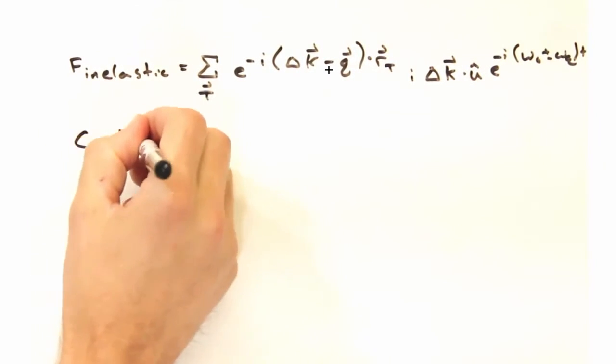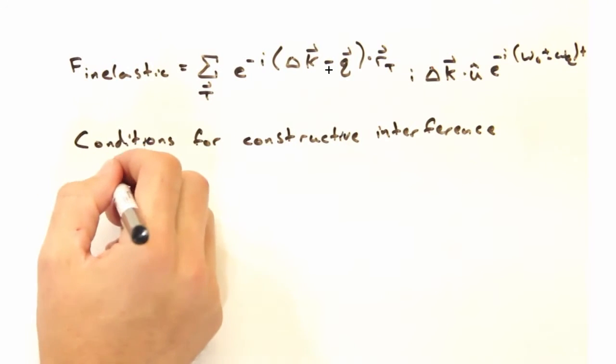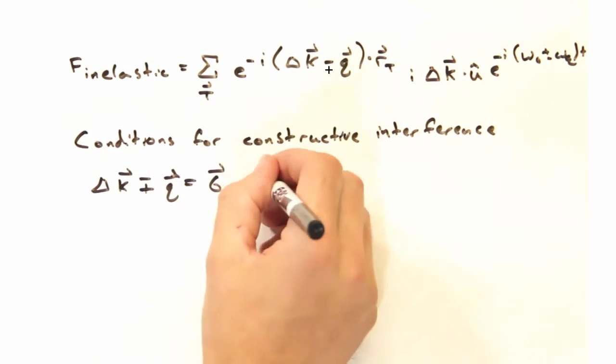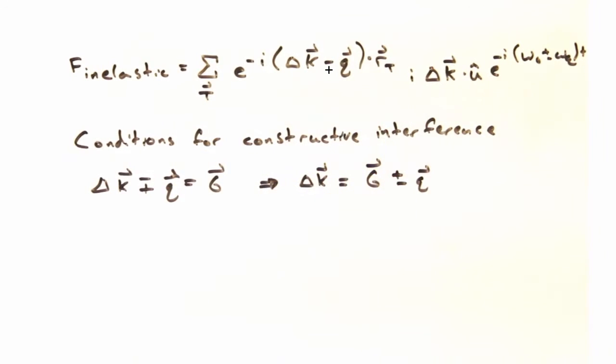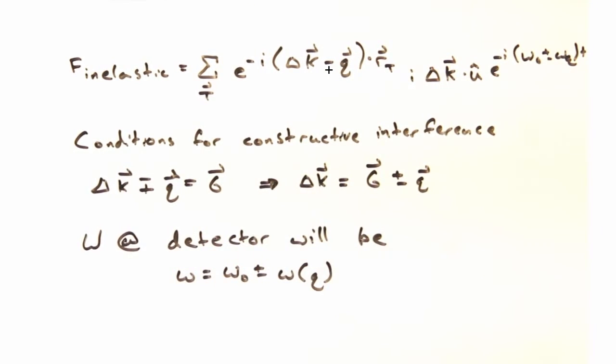We can obtain an expression for constructive interference by looking at the first exponential, where we see that delta k plus or minus q is going to be equal to g, which we can rewrite as delta k has to equal g, but now plus or minus q. And the frequency at the detector, when we do this, is going to be the original frequency, plus or minus the frequency of the phonon associated with q.